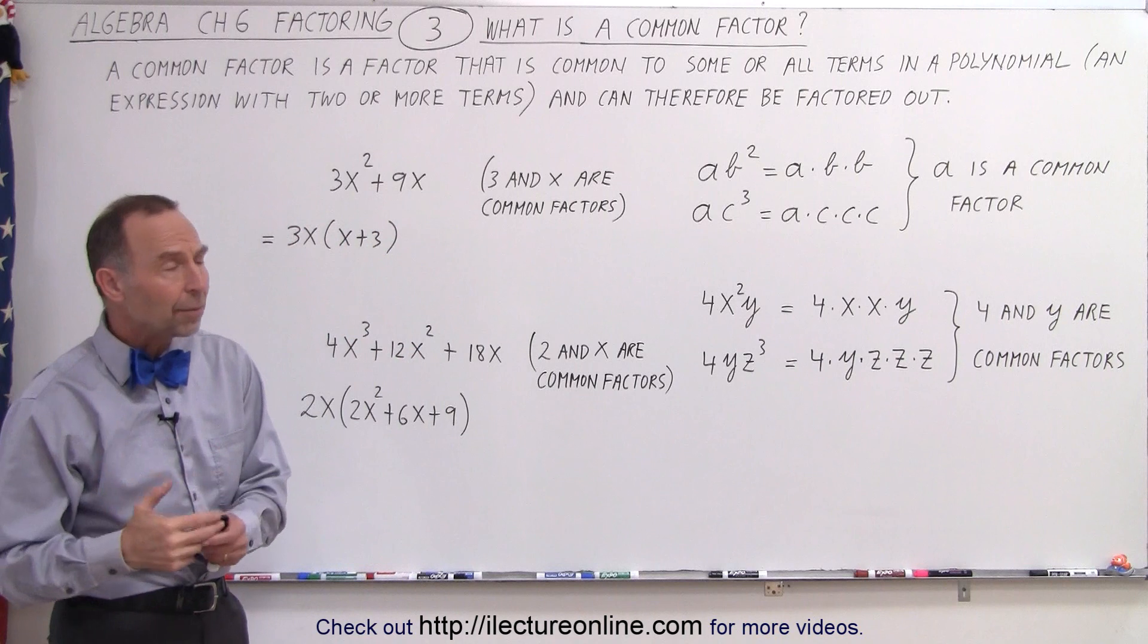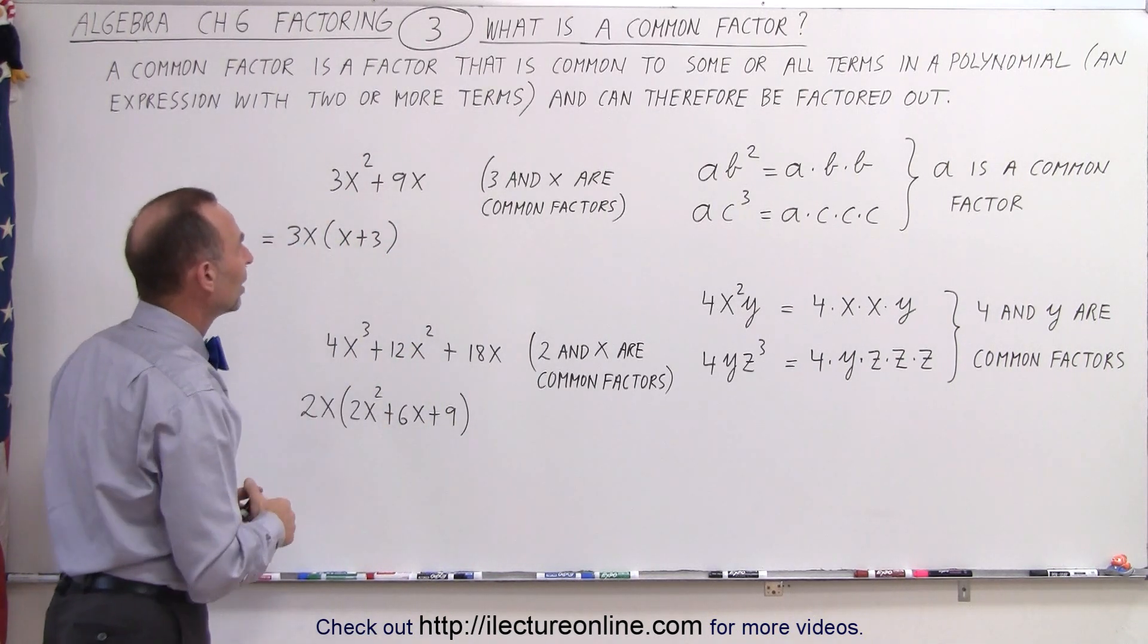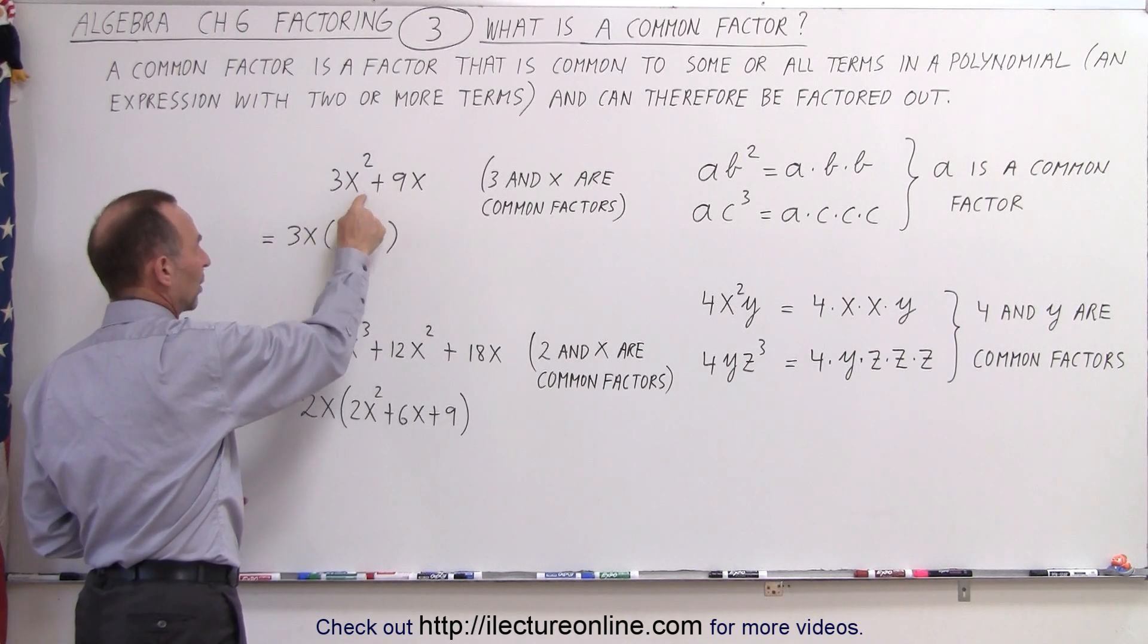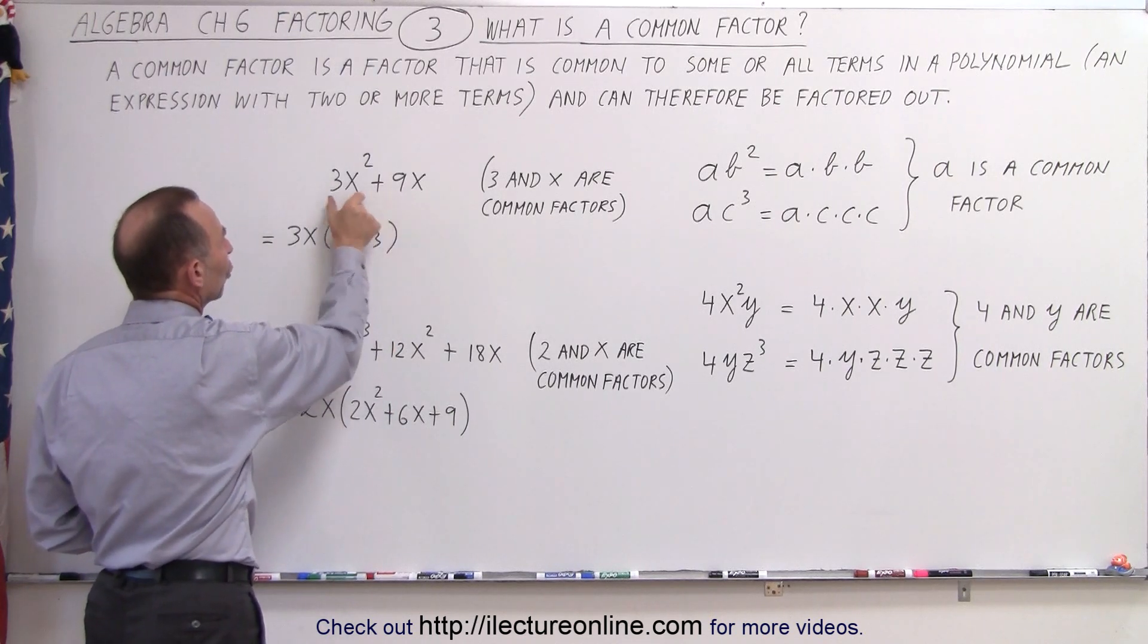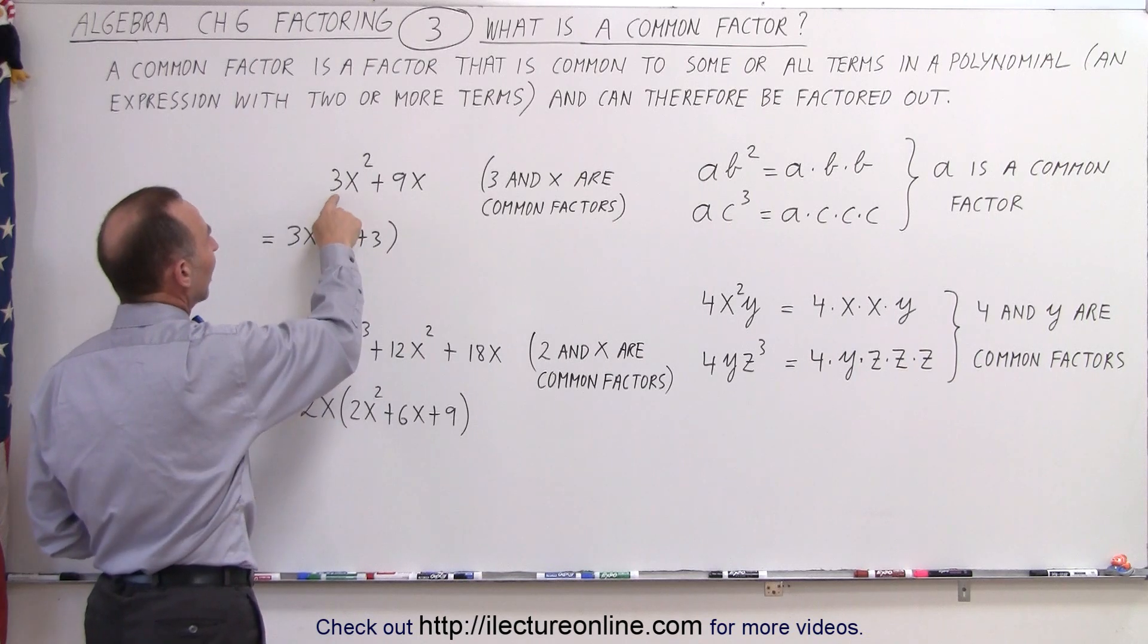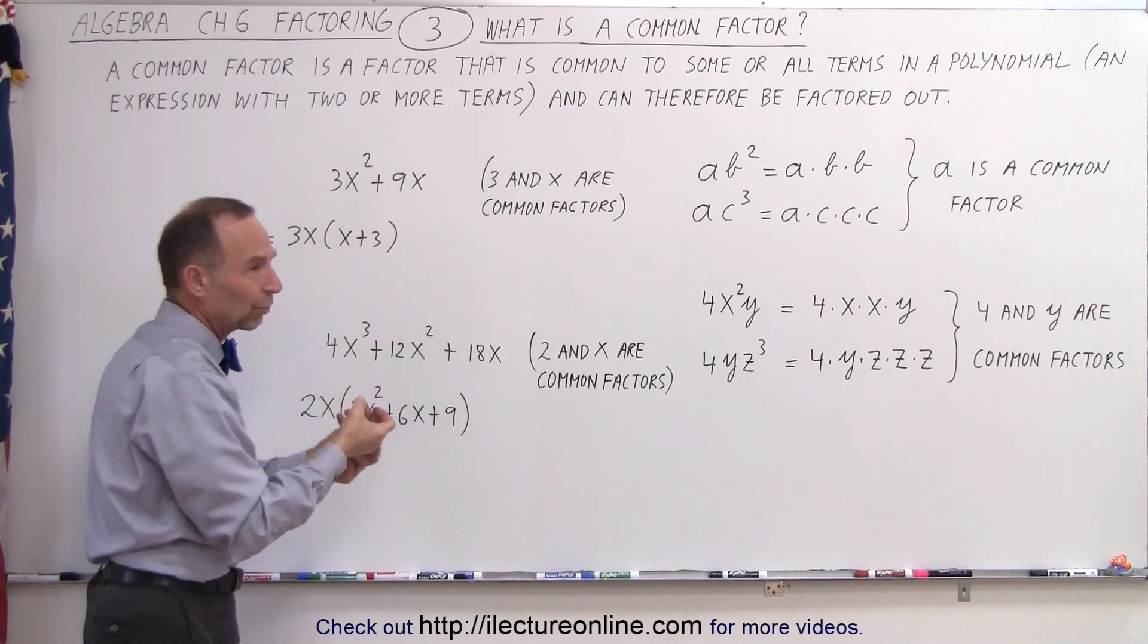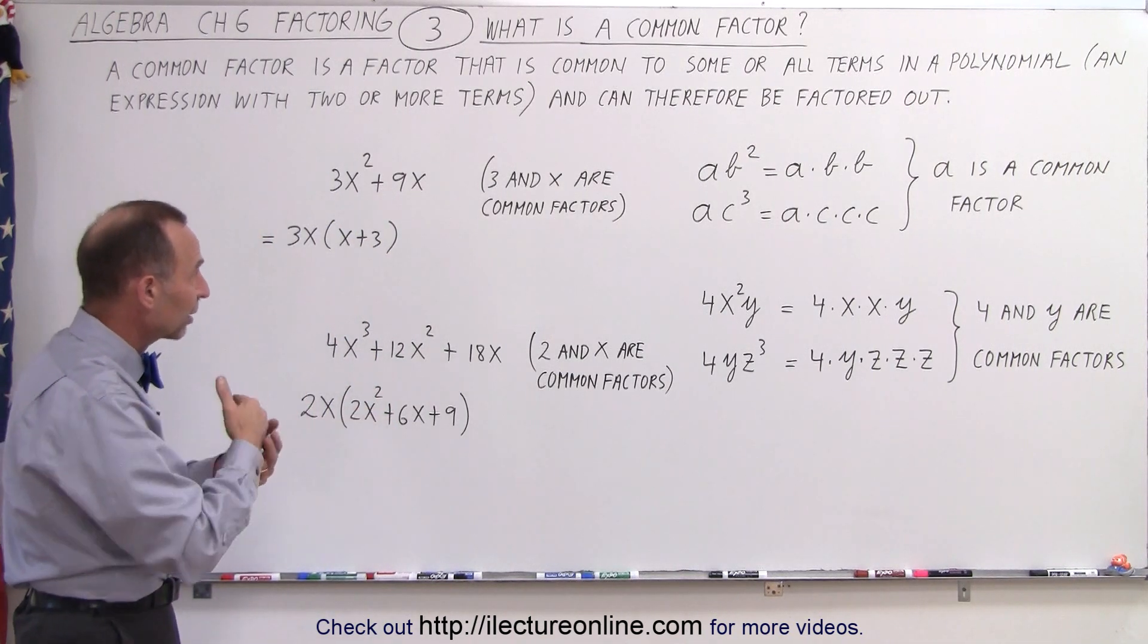More commonly, we look for common factors when we have an expression like this binomial: 3x² + 9x. Notice both terms contain factors that are common. I can divide each term by 3, which is what we call taking out a common factor or factoring out a common factor.